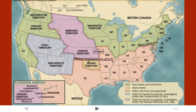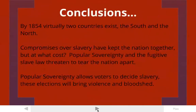Where the Missouri Compromise Line had been, these territories that were supposed to be free states could now have slavery in them. This is going to lead to major problems, as you'll see in the next video. Looking at the country, it's half slave, half free, with more slavery now possible — it really looks like two different countries at this point, just as Lincoln said in his speech only four years after this law was passed. By 1854, virtually two countries existed: the South and the North. The compromises over slavery had kept the nation together, but at what cost? Popular sovereignty and the Fugitive Slave Law both threatened to tear the nation apart — popular sovereignty allowed voters to decide on slavery, and these elections would eventually bring violence and bloodshed.